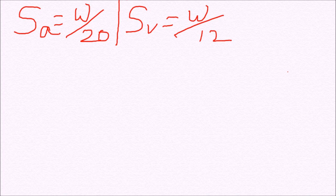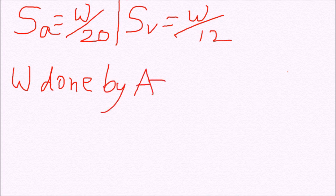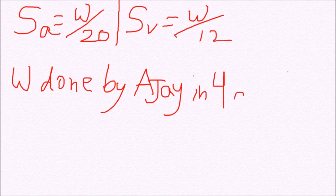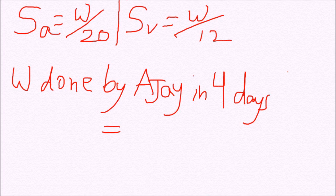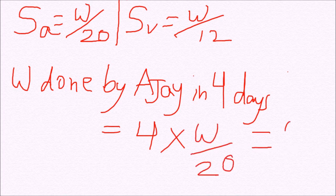The work done by Ajay in 4 days is equal to the distance travelled by Ajay in 4 days that is speed into time. Time is 4 days and speed is W by 20 which is W by 5.